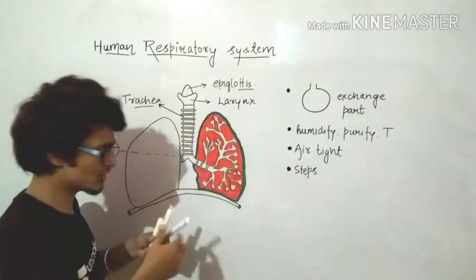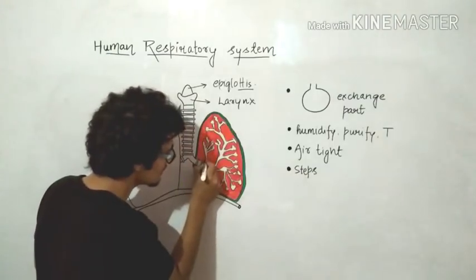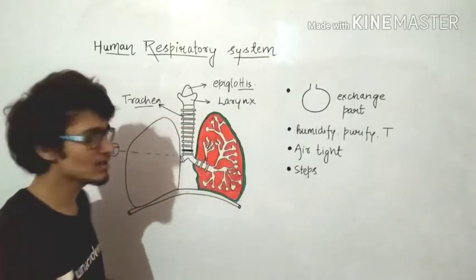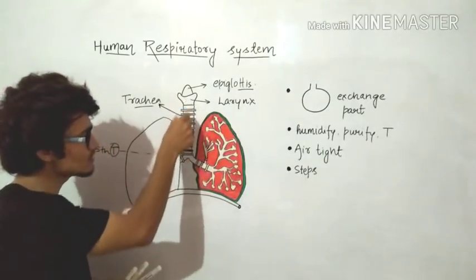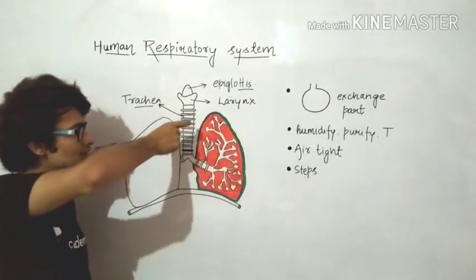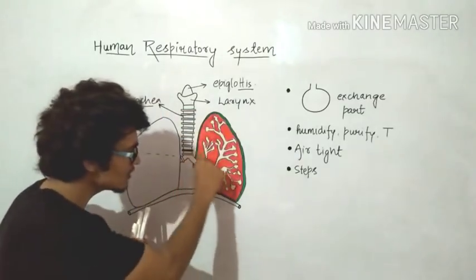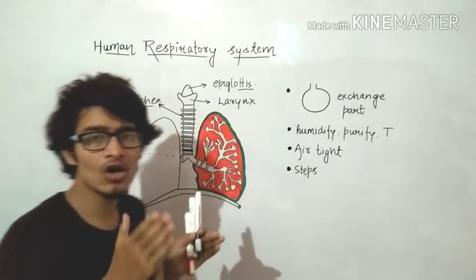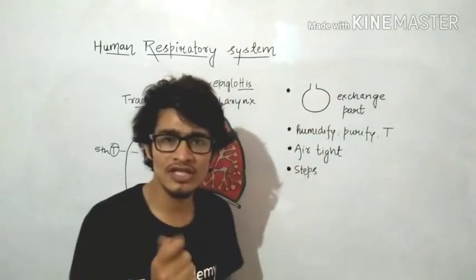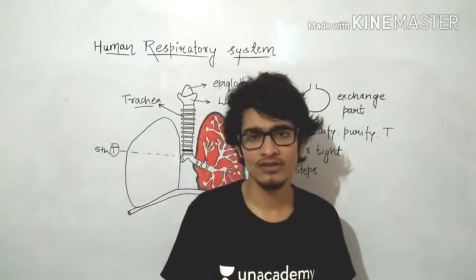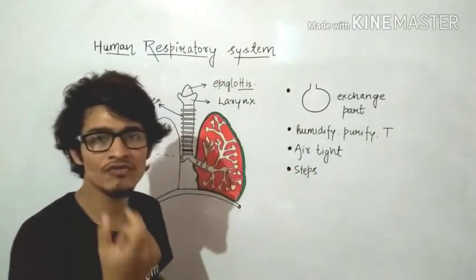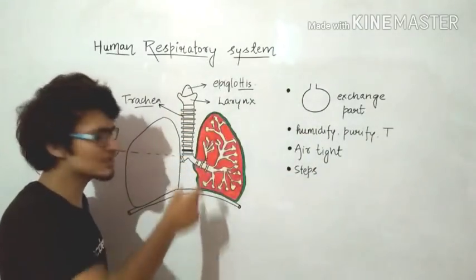The primary bronchi and secondary bronchi are supported by incomplete cartilaginous rings. This is the trachea — I have a ring in my hand which is incomplete in nature. These rings are placed so that the trachea and all the important conducting structures will not collapse, because they are very delicate and soft. To support them we need these rings, and those rings are present throughout the conducting airways.